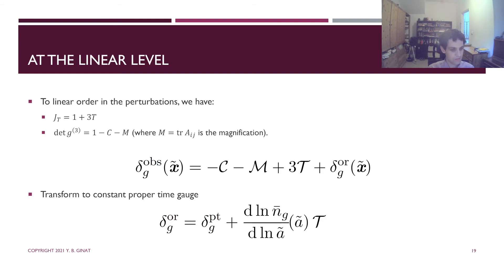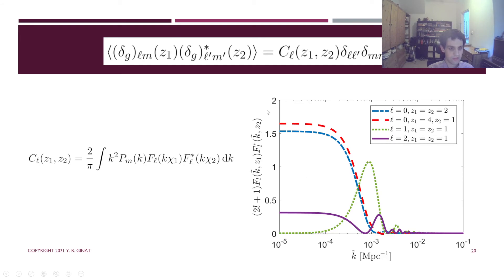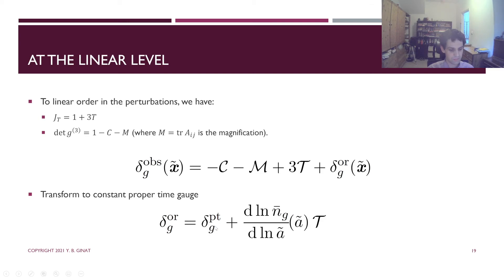At the linear level, this equation reduces to something much simpler. M is the trace of A_{IJ} and is the magnification, C is the longitudinal deformation of the ruler, and T is the cosmic clock. You can change from constant observed redshift overdensity to constant proper time overdensity, which brings out another factor of T. I've done an angular decomposition and plotted the integrand of the angular power spectrum for various multipoles. You can see that this integral does not diverge at low values of K — a consequence of the fact that C, M, T, and delta proper time are all gauge-invariant, and so the monopole is finite.